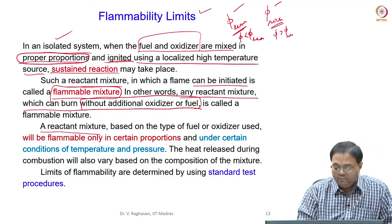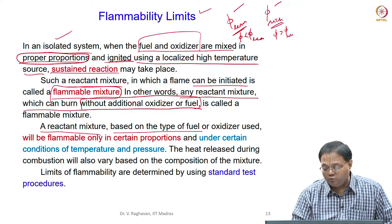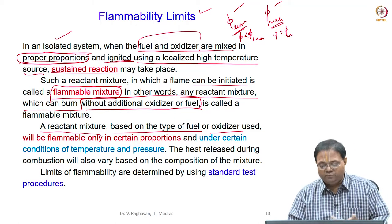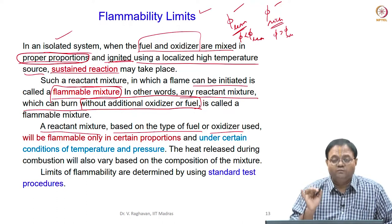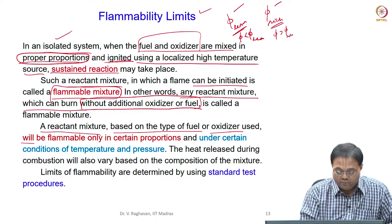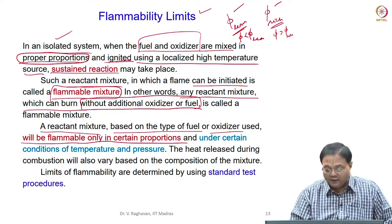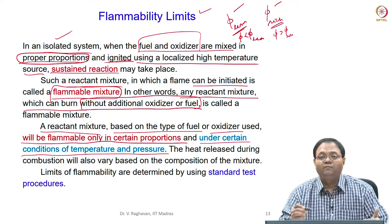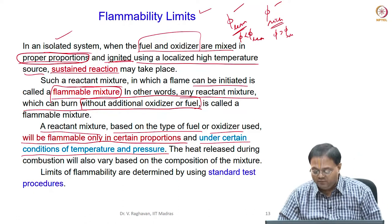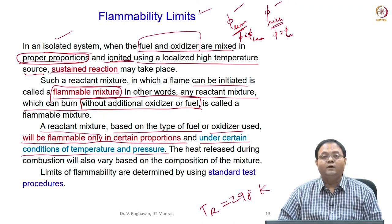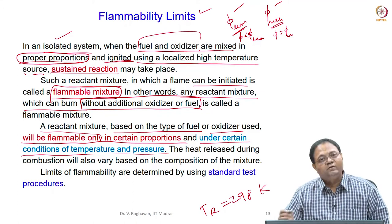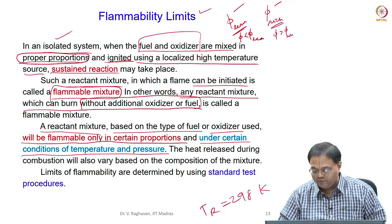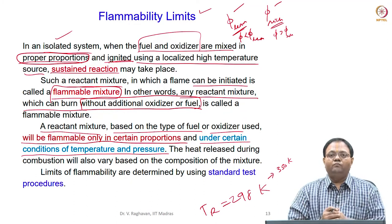A reactant mixture's flammability limits depend on the type of fuel, the type of oxidizer (pure oxygen, air, etc.), temperature, and pressure. Different oxidizers give different flammability limits — meaning the mixture is flammable only in certain proportions and under certain conditions. When you increase the unburned gas temperature, say from 298 K to 350 K, this limit will widen.